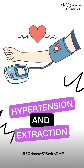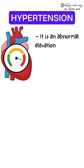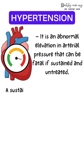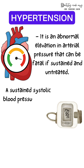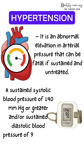Today we are going to see the relationship between hypertension and extraction, and the guidelines that need to be followed. Hypertension is an abnormal elevation in arterial pressure where systolic blood pressure of 140 or more and diastolic blood pressure of 90 or more millimeters mercury is termed as hypertension.